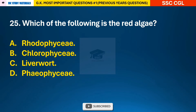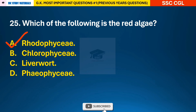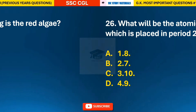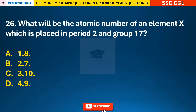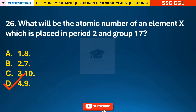Question 25: Which of the following is the red algae? — answer A: Rhodophyceae. Question 26: What will be the atomic number of an element X which is placed in period 2 and group 17? — answer D: the atomic number will be 9.